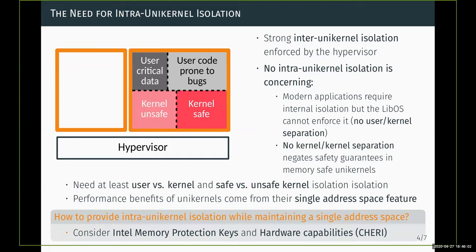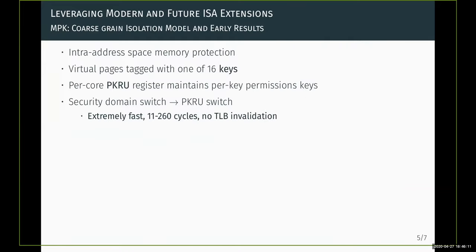In this position paper, we look at two recent technologies: Intel MPK and hardware capabilities. MPK provides memory protection within an address space. Briefly, we can tag virtual memory pages with one of 16 available protection keys in the page table entries. Each CPU core has a private register called the PKRU, which contains per-key permission access rights for the currently running thread. Switching between security domains is extremely fast — just updating the PKRU with a new value, no TLB invalidation, done in just a few cycles. So it's really perfect for unikernels.